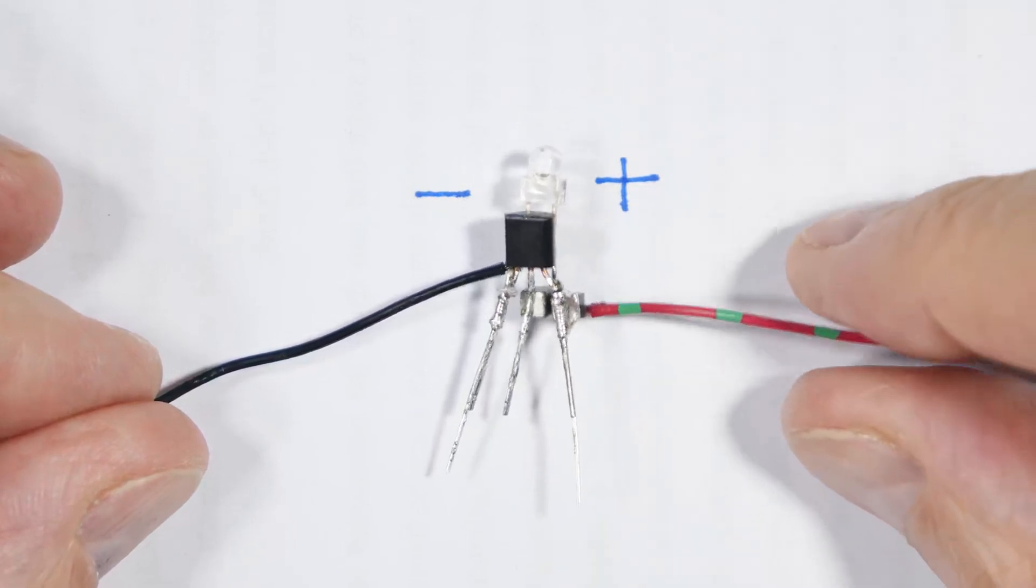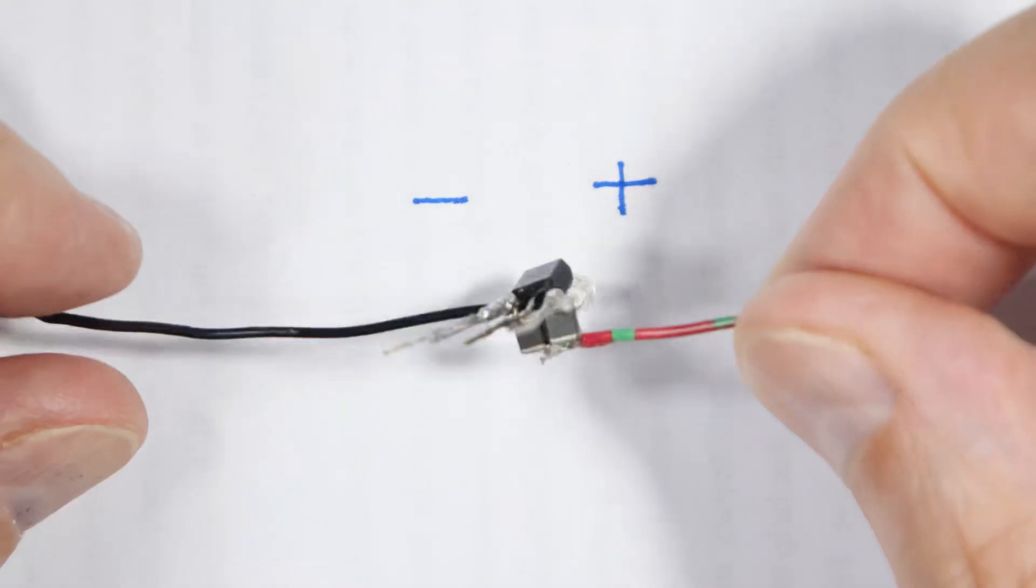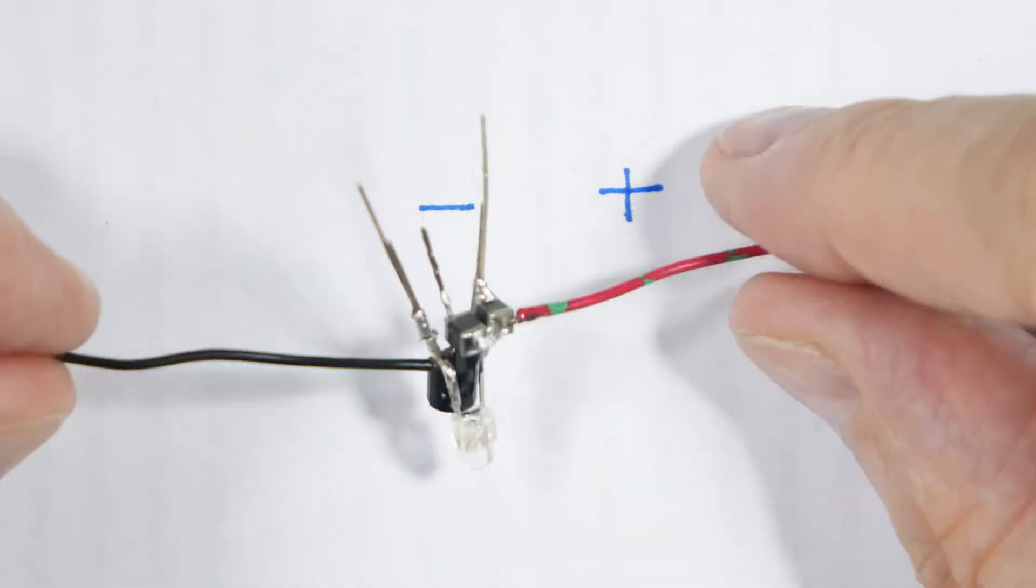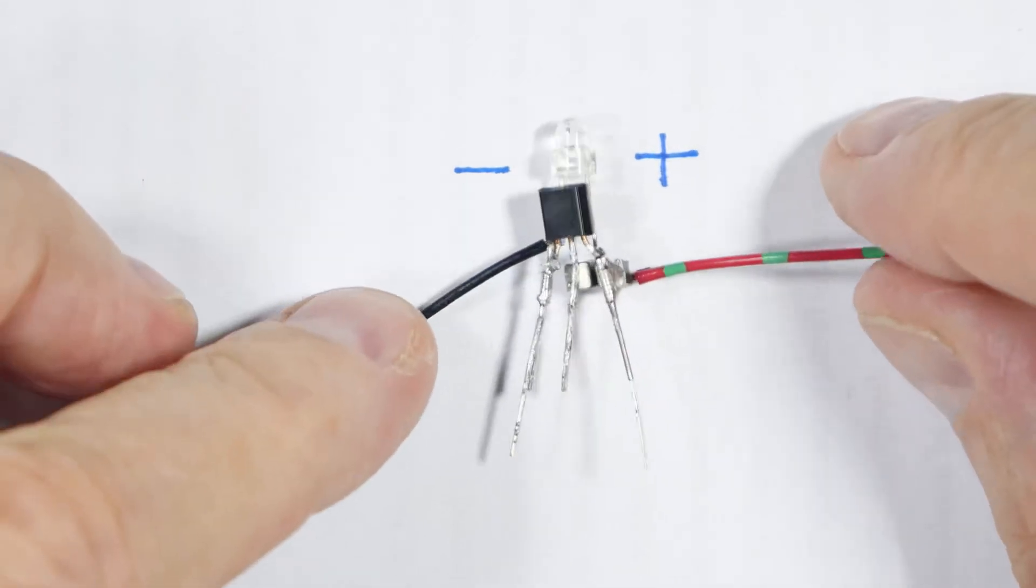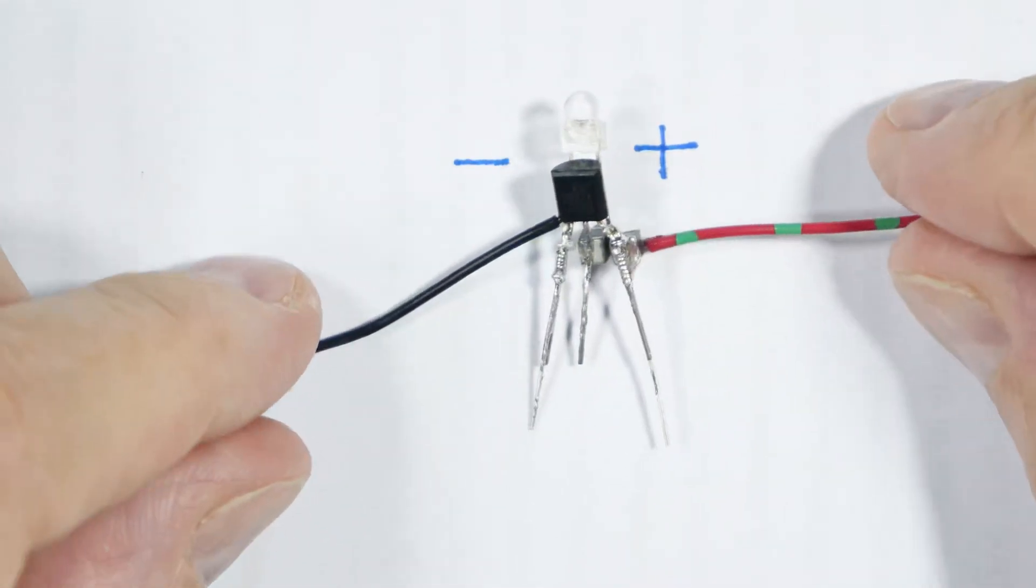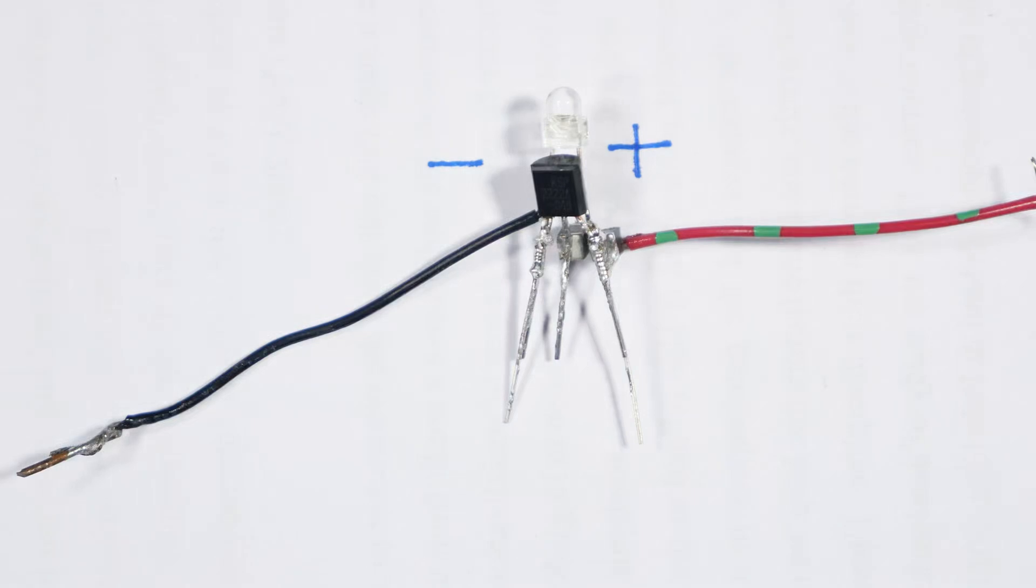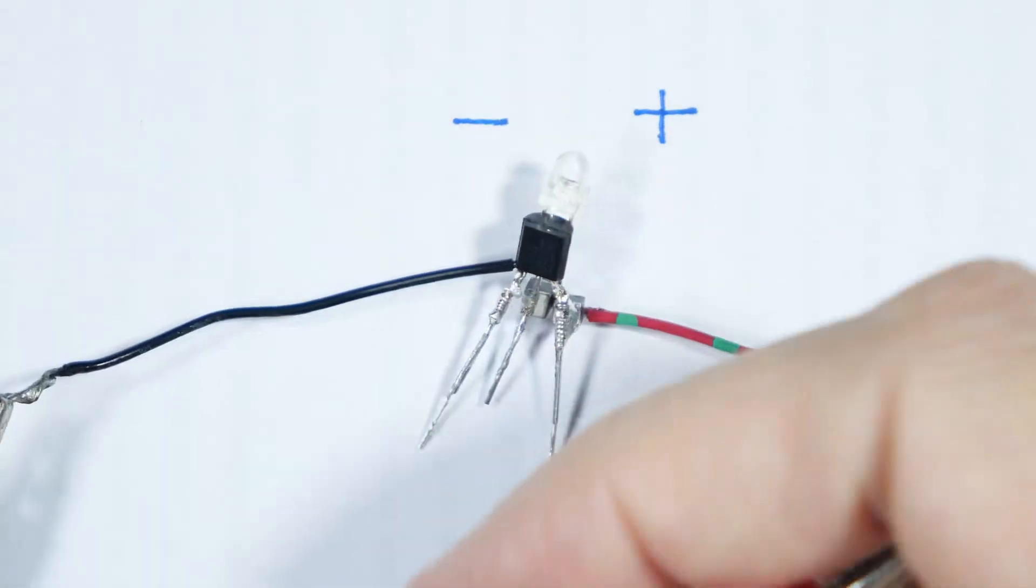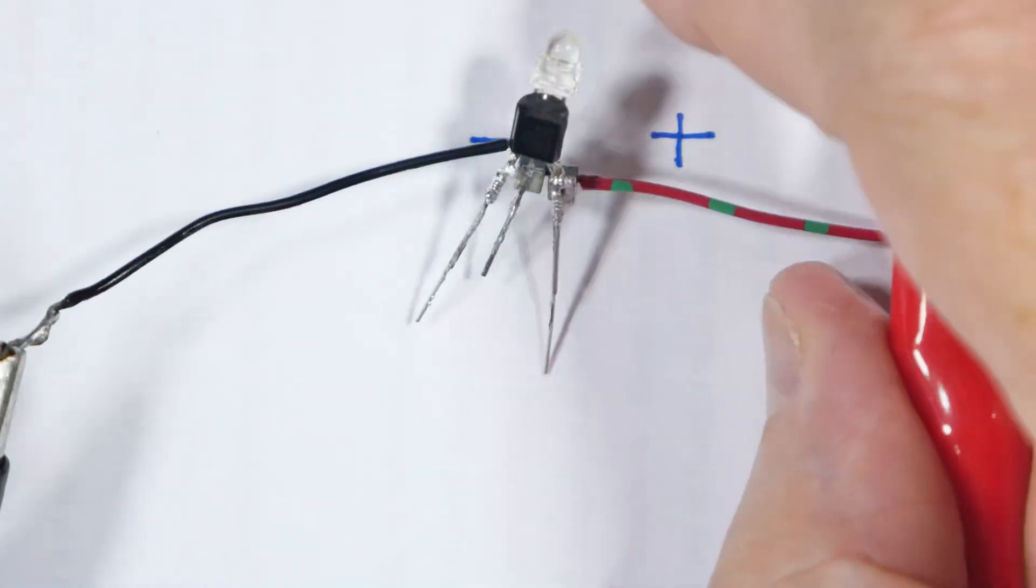Let's hook it up to our power supply. I don't have a dead battery around, of course, when I need one, but it's set to 0.6 volts. Let's see if we get our light out of it.